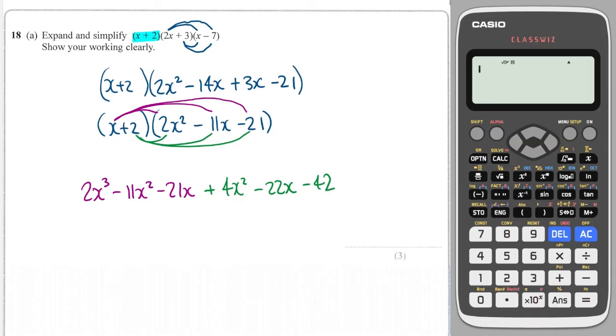Okay, now I've got to collect up the like terms. Well, there's only one x cubed term, which is 2x cubed. We have how many x squareds? We've got this one and we've got this one, so minus 11 plus 4 is minus 7.